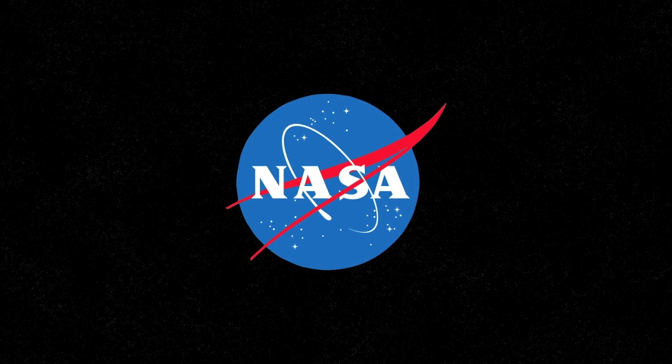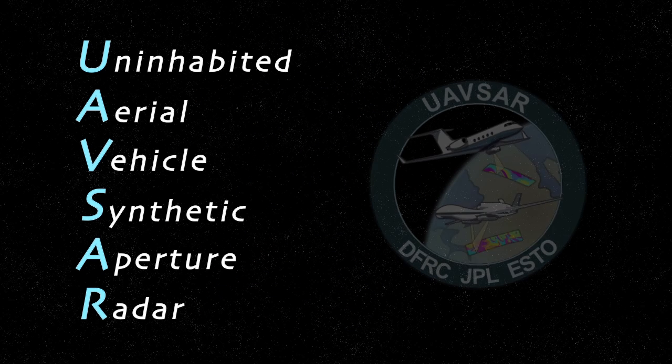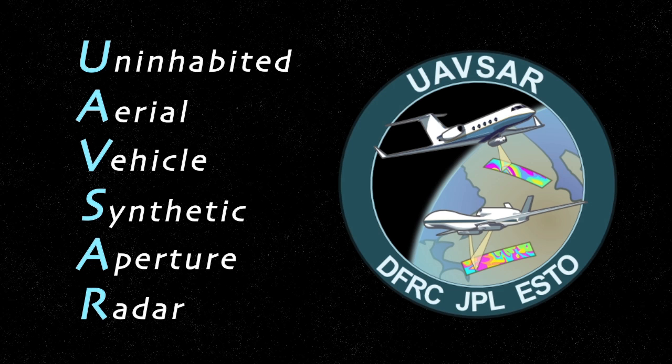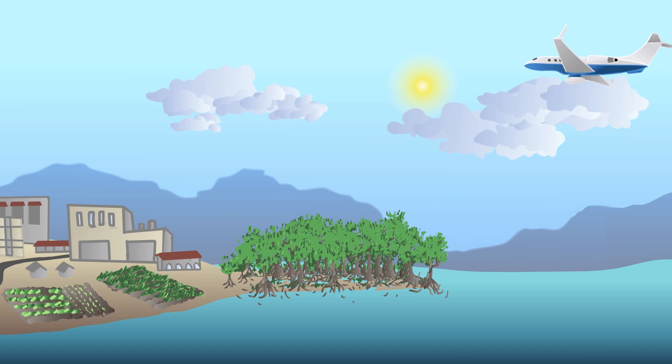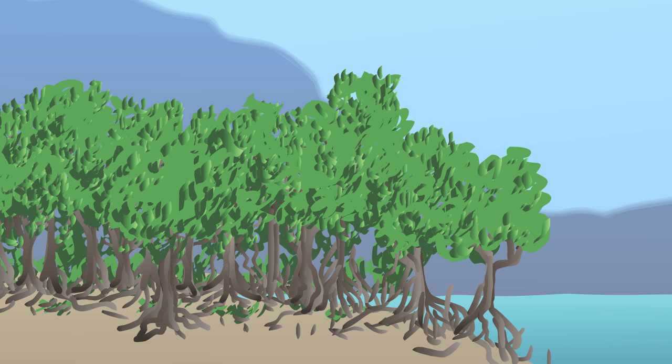NASA uses the UAVSAR, which is an active remote sensing instrument. It is a radar that can see through clouds and can measure forest structures and biomass. UAVSAR sends microwave pulses over the wetlands and detects the reflection.